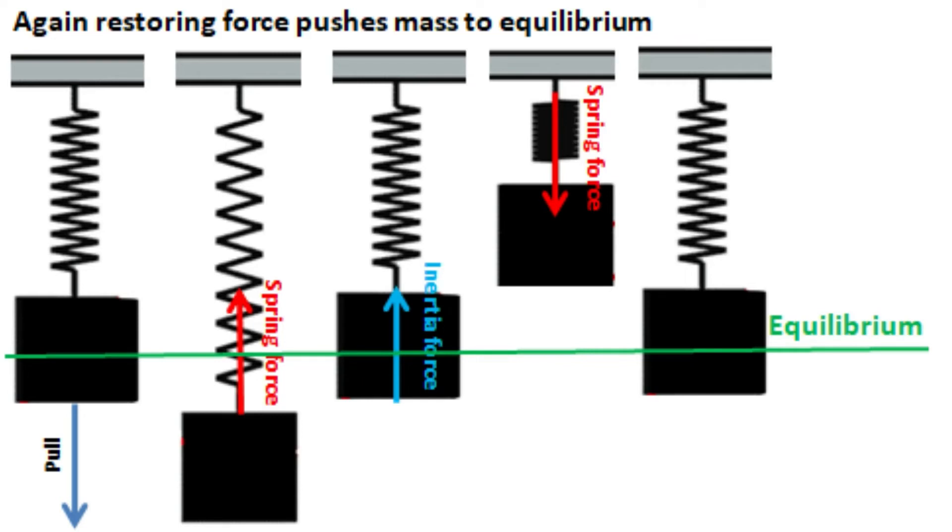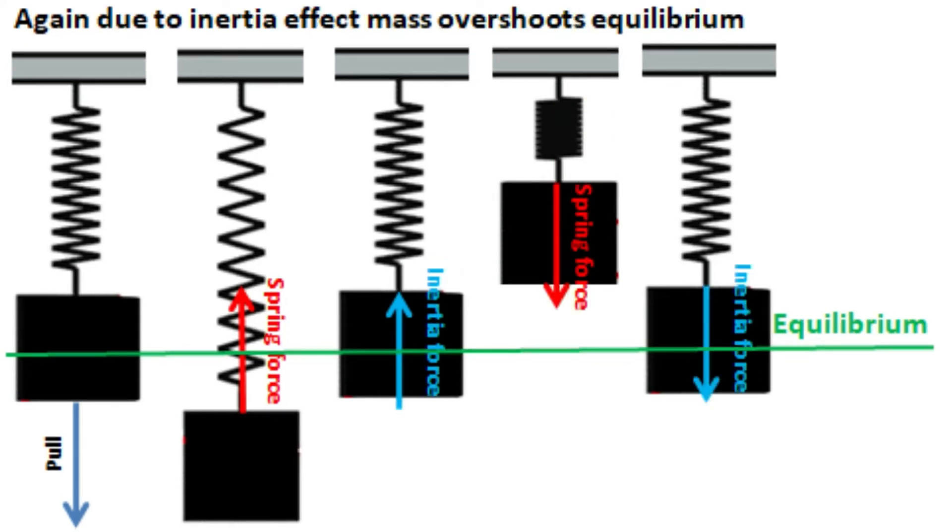Again, due to inertia effect, the mass overshoots the equilibrium position and reaches the other side. Now again the spring force tries to bring the mass towards equilibrium, and this phenomenon continues unless there is external influence.